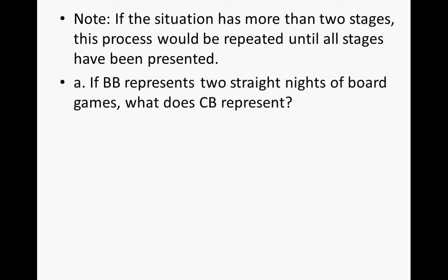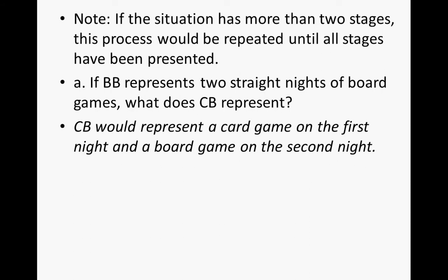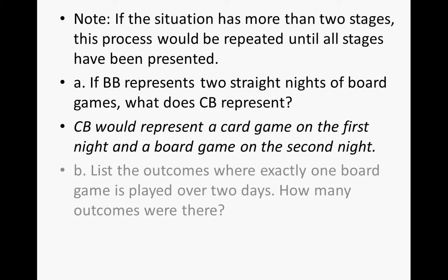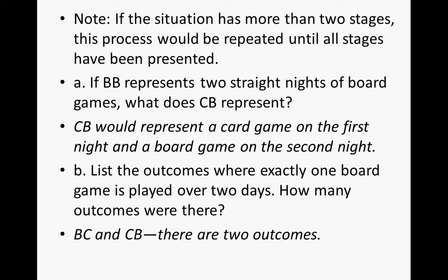For Part A: if BB represents two straight nights of board games, what does CB represent? CB represents a card game on the first night and a board game on the second night. For Part B: list the outcomes where exactly one board game is played over the two days. We could have board game, card game, or card game, board game — so there are two outcomes.